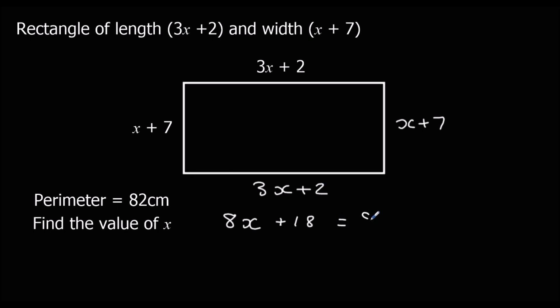Now we have to solve. We're going to take 18 away from both sides, so 8x left here. 82 minus 18 is 64. Then we're going to divide by 8. x equals 8, so x is 8 centimeters.